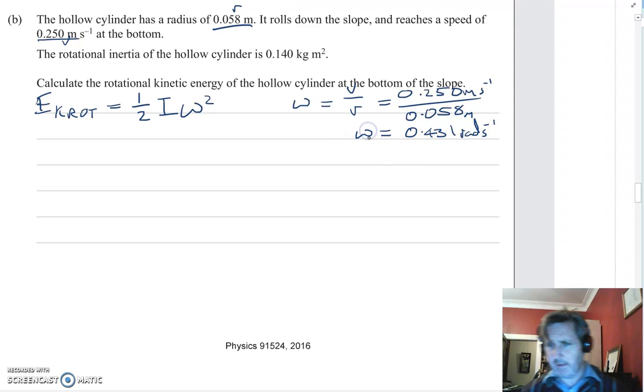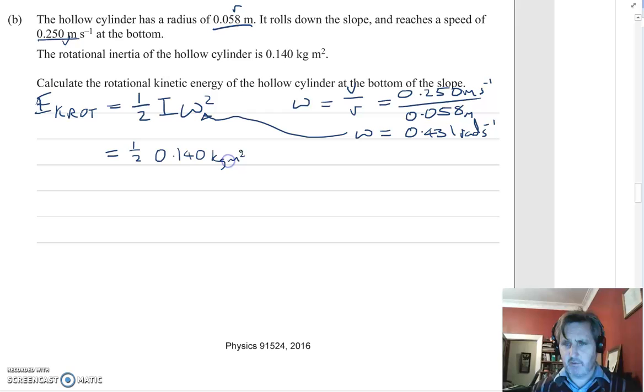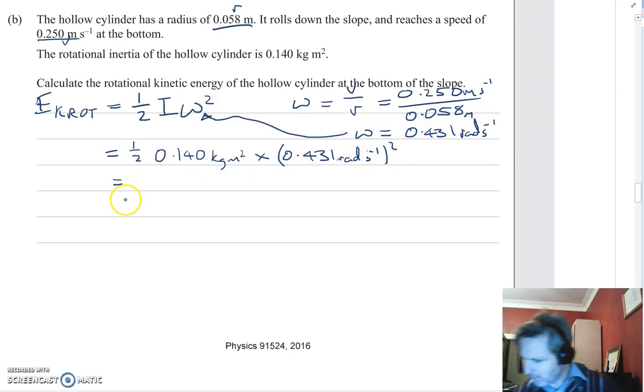So we needed that to solve this equation here. We're going to take this and put it into there. So now we've got EK rotational equals half the inertia, 0.140 kilogram meters squared, times omega squared. And that answer is going to give us 1.30 joules.